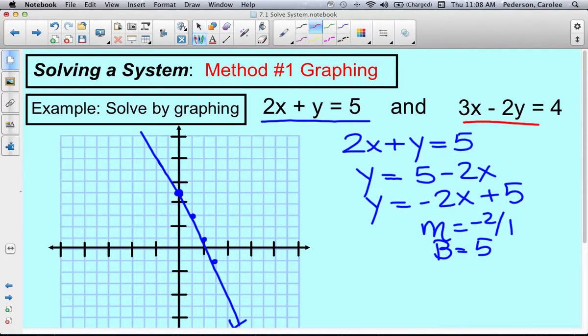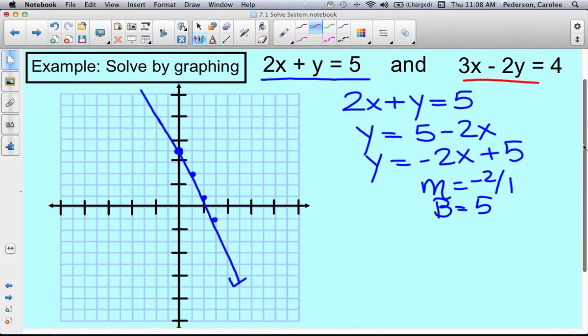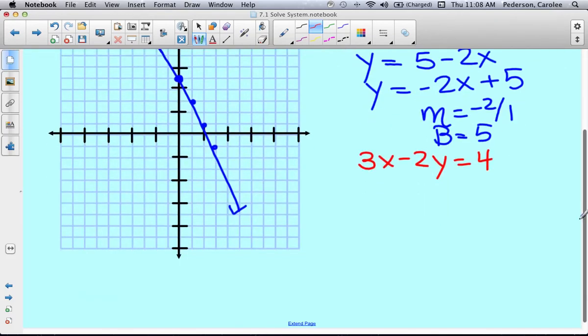Now we're going to graph this line. So I need to convert that to slope intercept form. I have 3x minus 2y equals 4. So we solve this for y, so I'm going to subtract 3x from both sides, and then I'm going to divide both sides by negative 2.